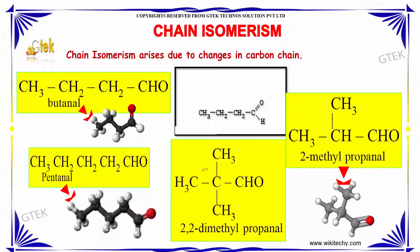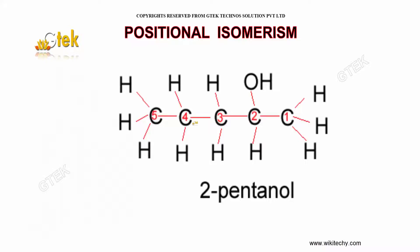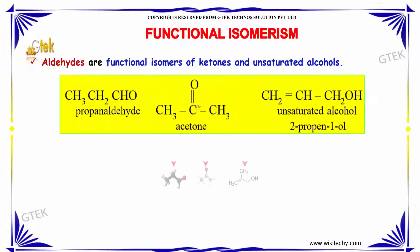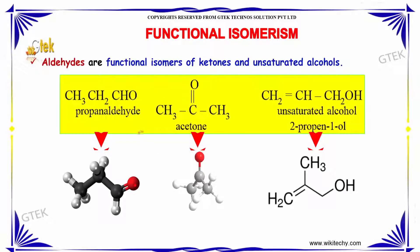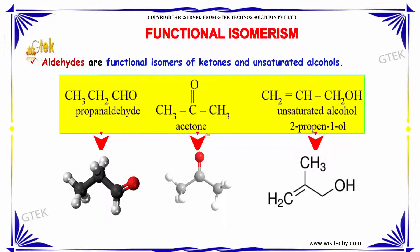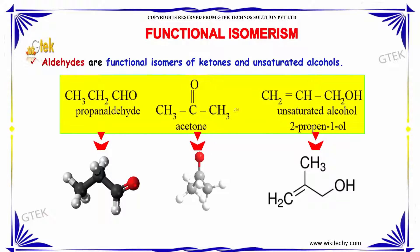Positional isomerism is the second type. Aldehydes are functional isomers of ketones and unsaturated alcohols. For example, propanaldehyde and acetone are types of functional isomers, including 2-propene-1-ol.